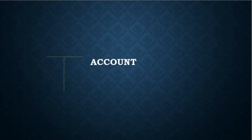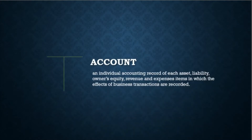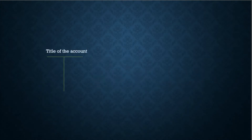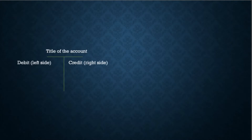Before we start journalizing business transactions, let us first define what an account is. An account is an individual accounting record of each asset, liability, owner's equity, revenue, and expenses item in which the effects of business transactions are recorded. In its simplest form, an account consists of three parts: the title of the account, a left side for the debit, and a right side for the credit. Because the format resembles the letter T, we refer to it as a T-account, which is a useful tool for illustrating, analyzing transactions, and problem solving.